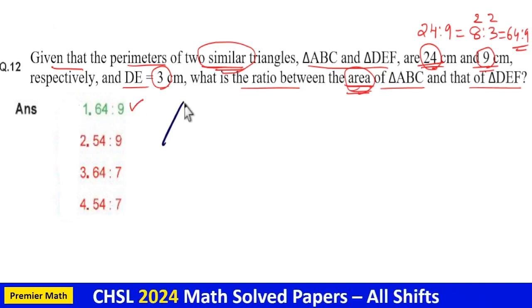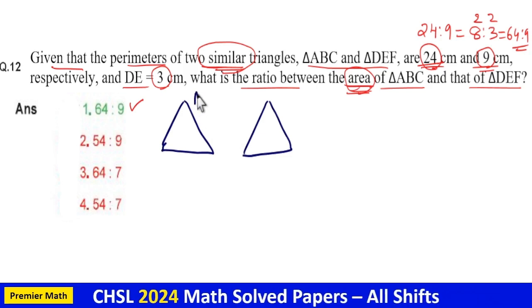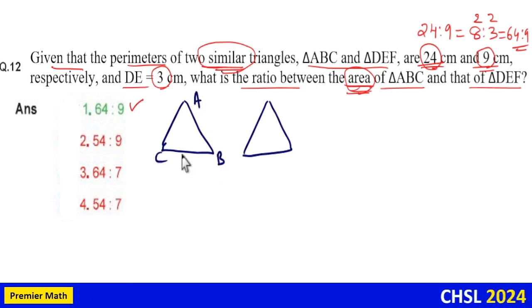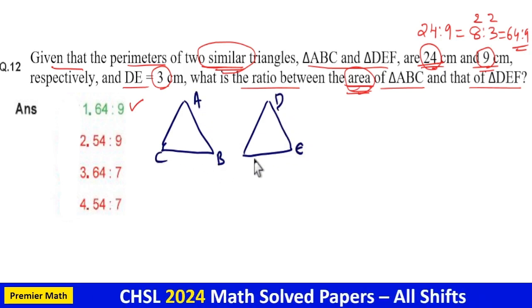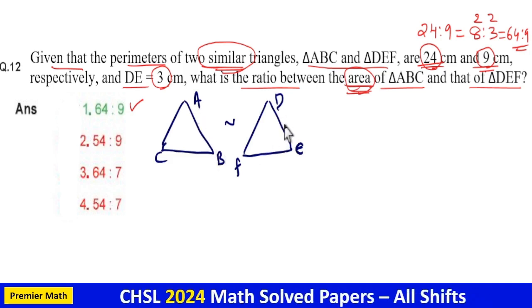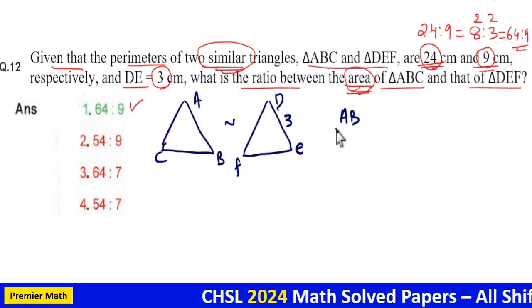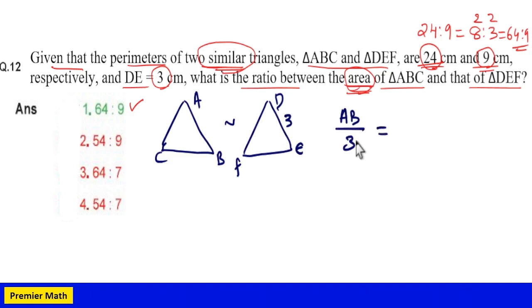You have two similar triangles ABC and DEF. If these two are similar, then the ratio of their corresponding sides—here corresponding sides means AB and DE are corresponding sides—then the ratio of AB by 3 is equal to the ratio of their perimeters, that is 24 by 9.